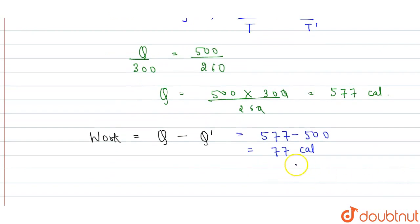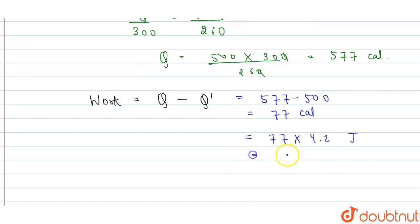Now we need to convert this to joules. We multiply by 4.2, which gives us 323 joules of work done.